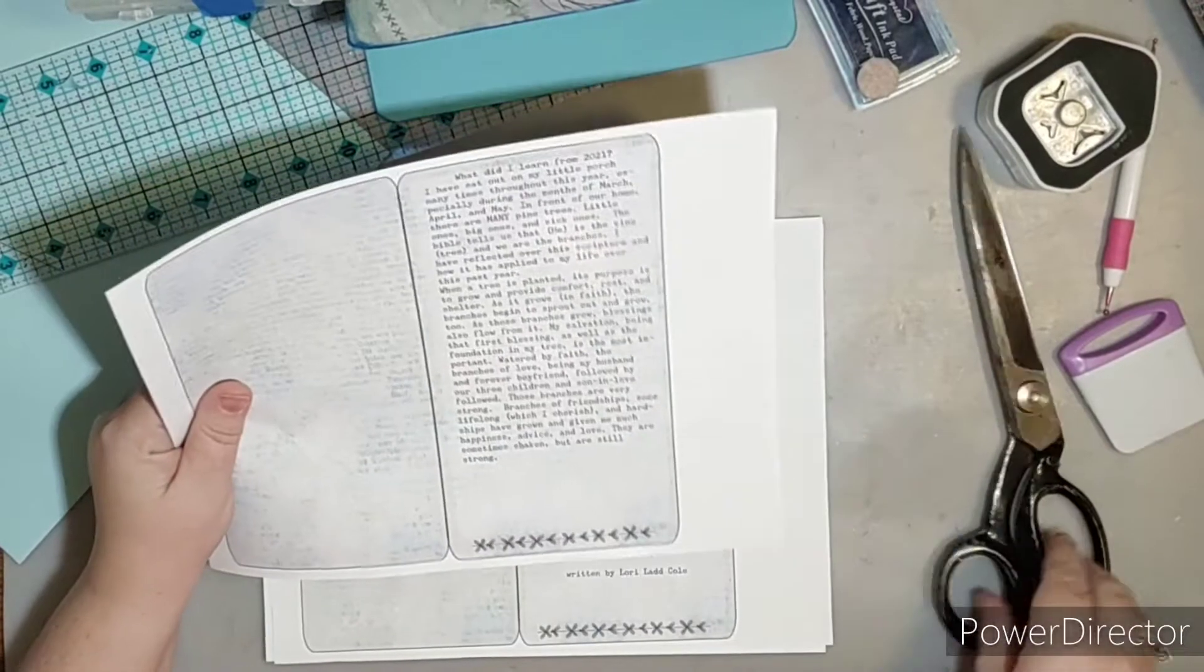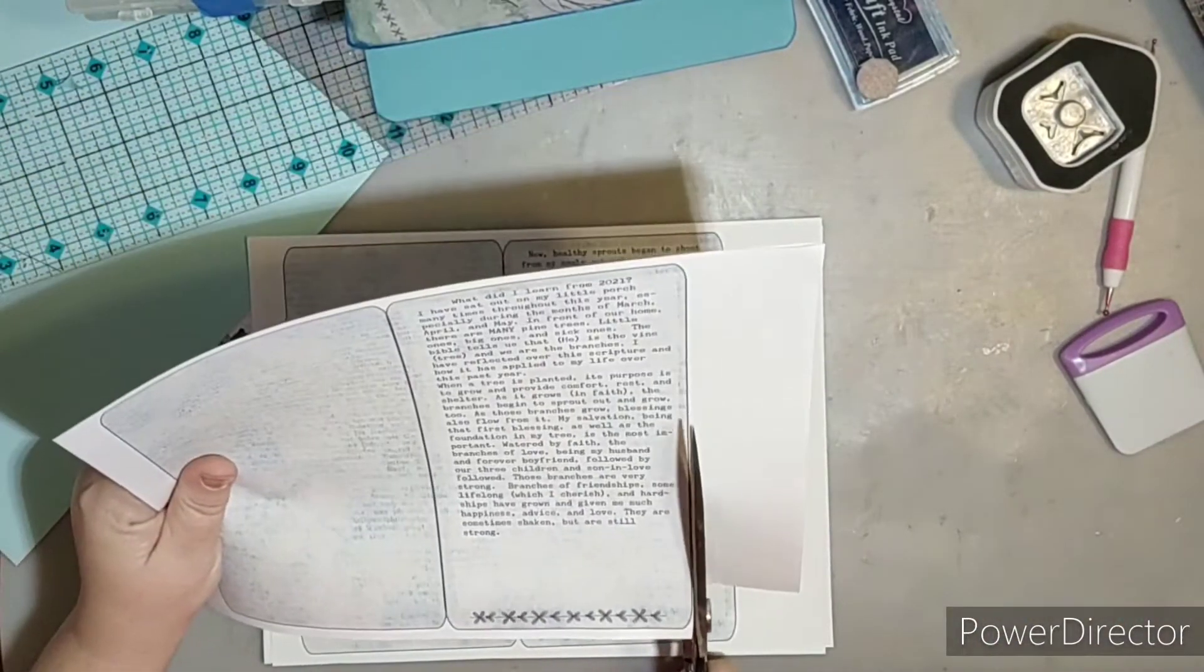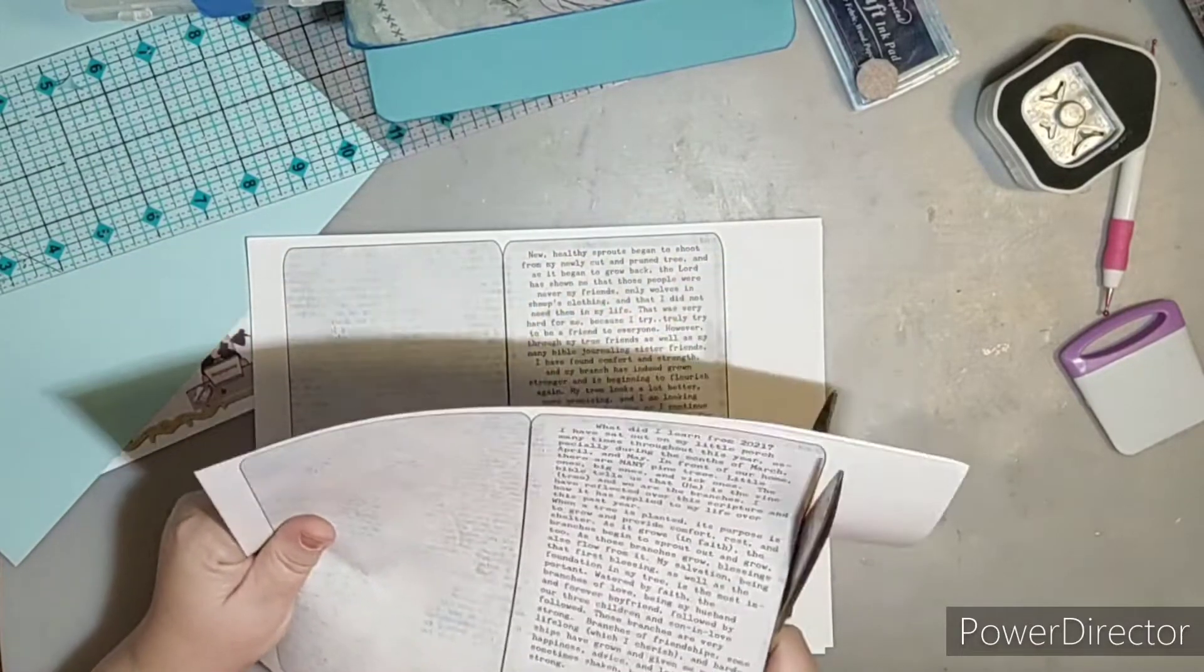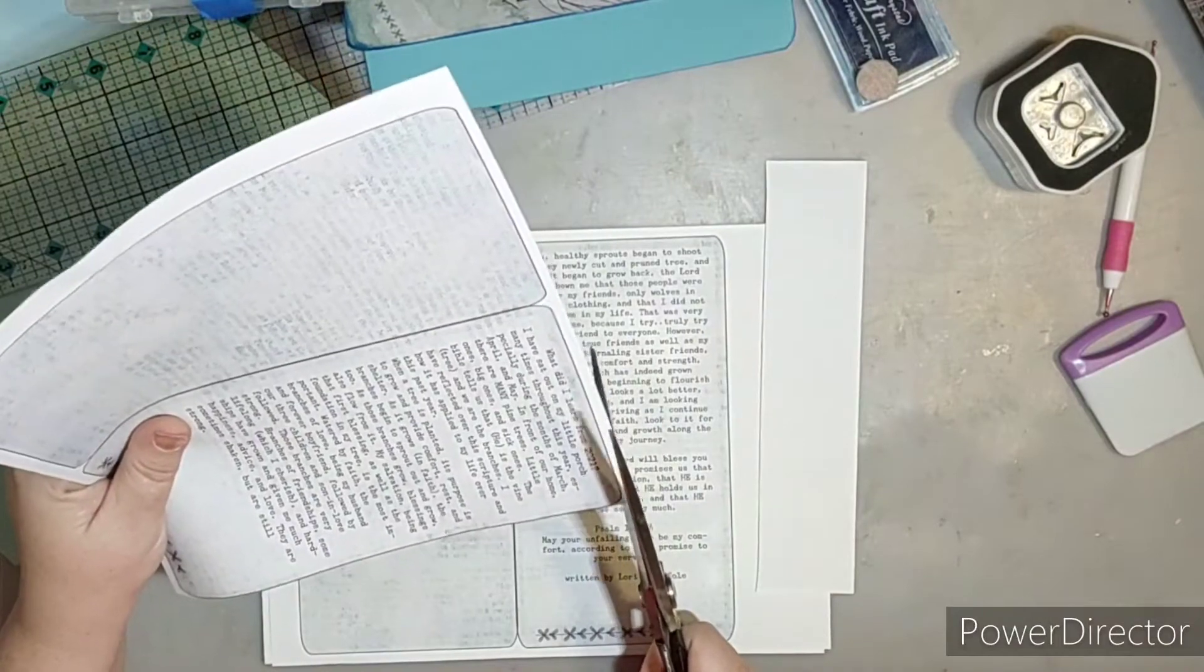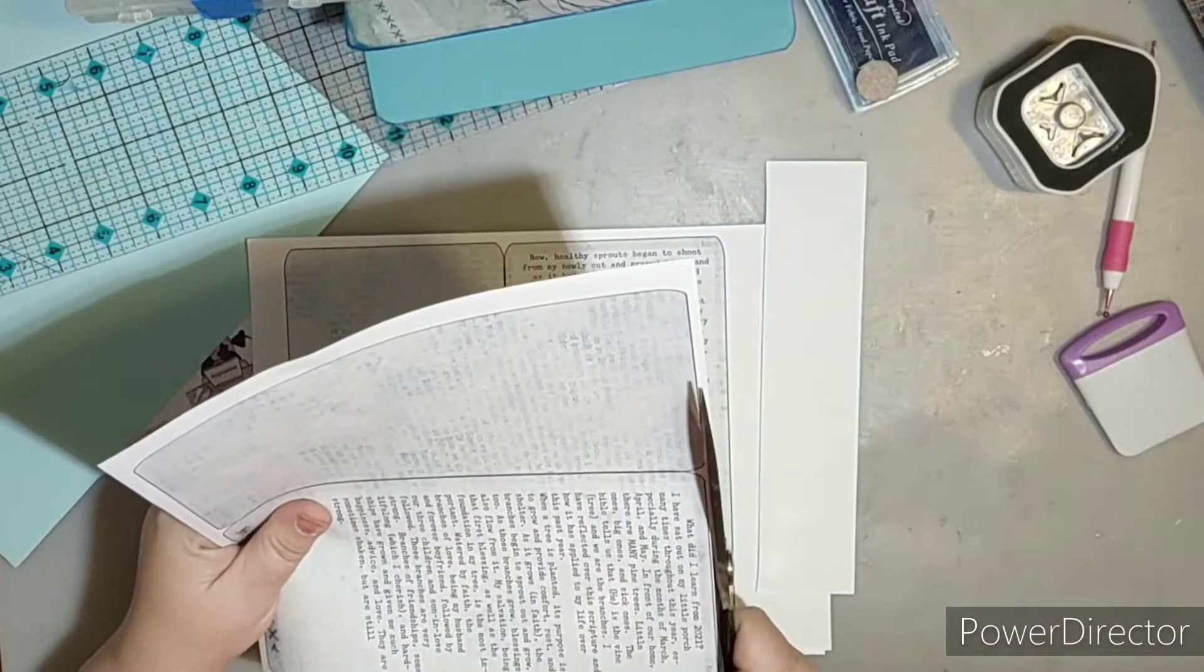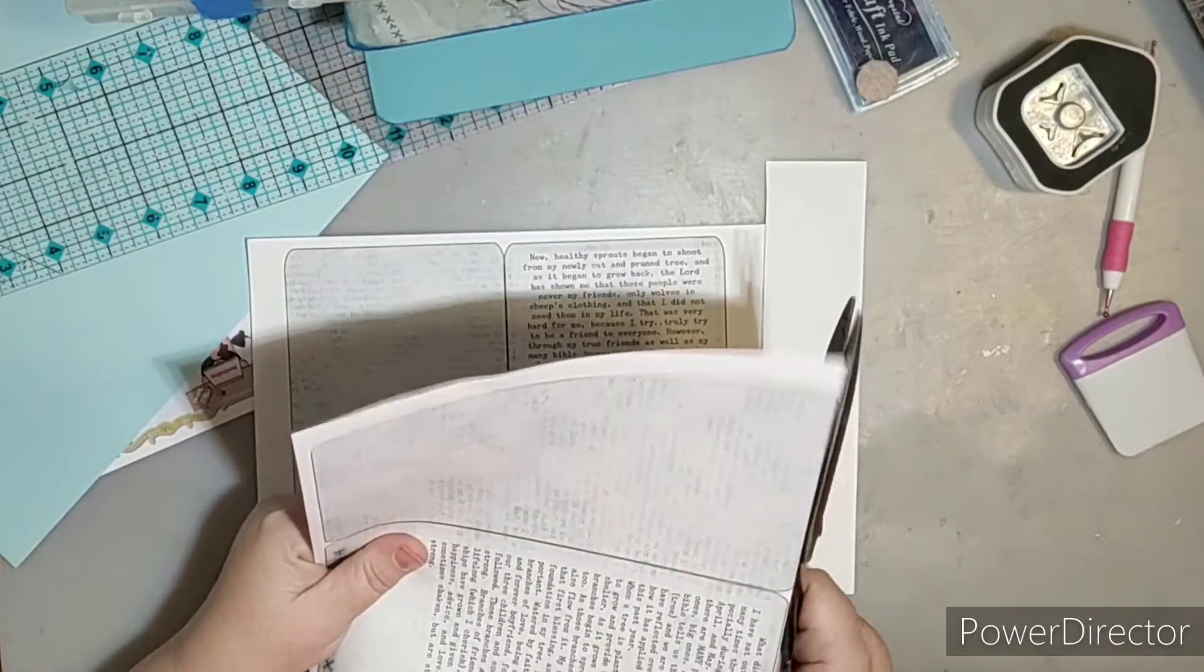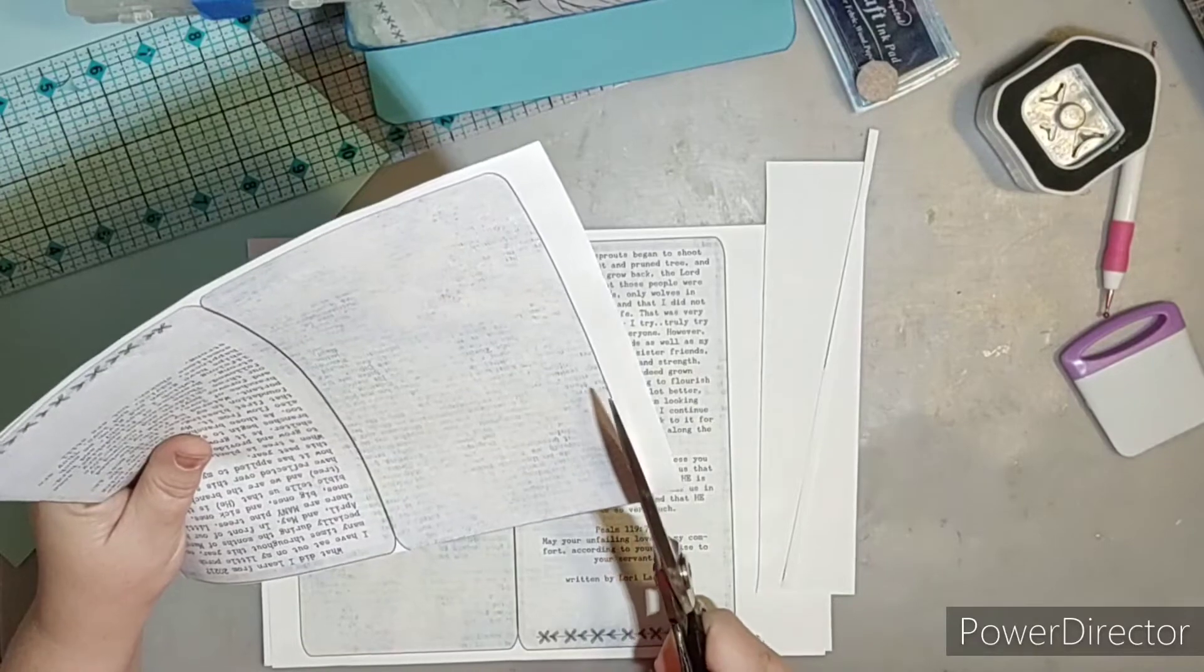So the first page of the devotion is going to be on the right and it's going to say what I have learned for 2021. Then the next page will be on the left, the third page will have the scripture and then the fourth page I think has the questions. But you can kind of figure it out because the first page will be on the right, the second page will be on the left.